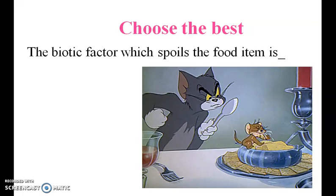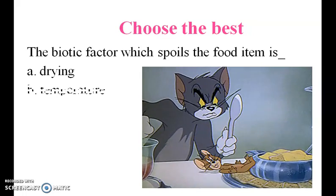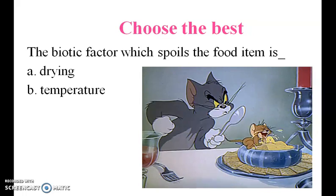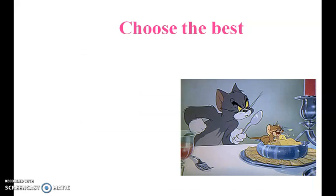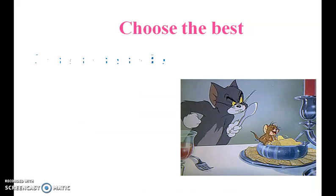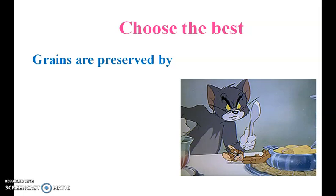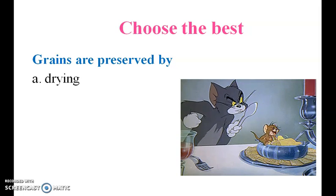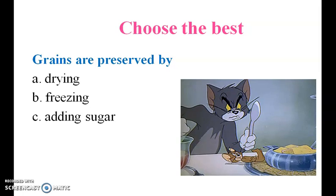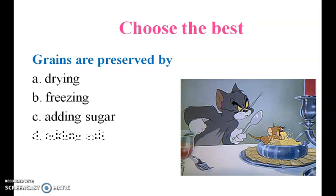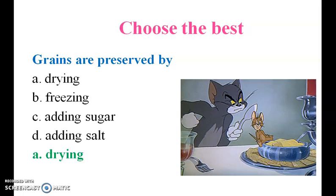The biotic factor which spoils the food item is drying, temperature, humidity, or bacteria. The answer is bacteria. Grains are preserved by drying, freezing, adding sugar, or adding salt. The answer is drying.